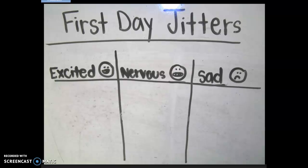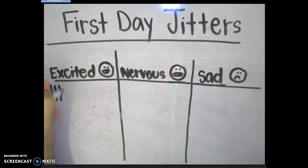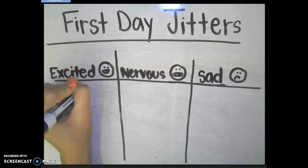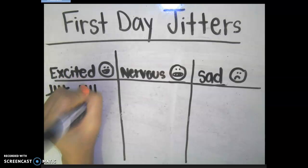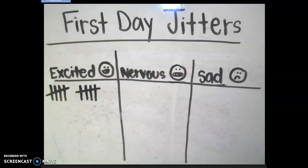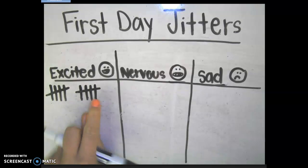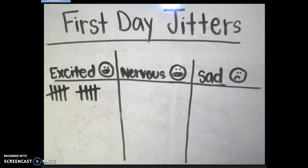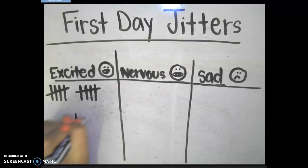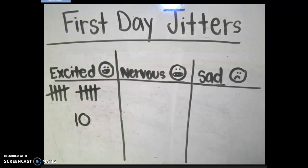Ten people said that they are excited about the beginning of the school year. So under 'excited,' I'm going to put ten tally marks: one, two, three, four, five, six, seven, eight, nine, ten. Remember, after every fifth tally mark, we draw a line. So that's ten people who voted that they are excited about the beginning of school.